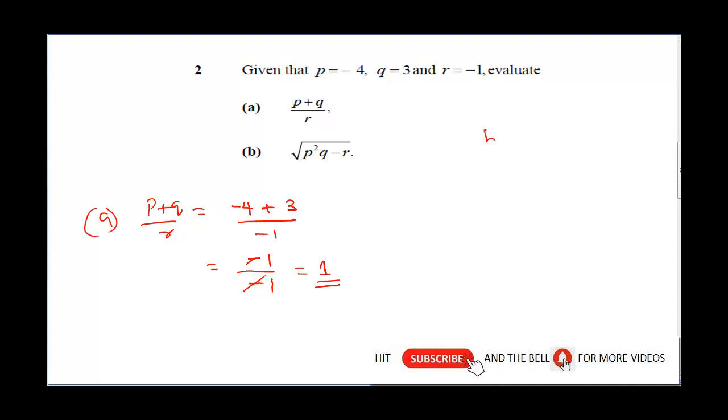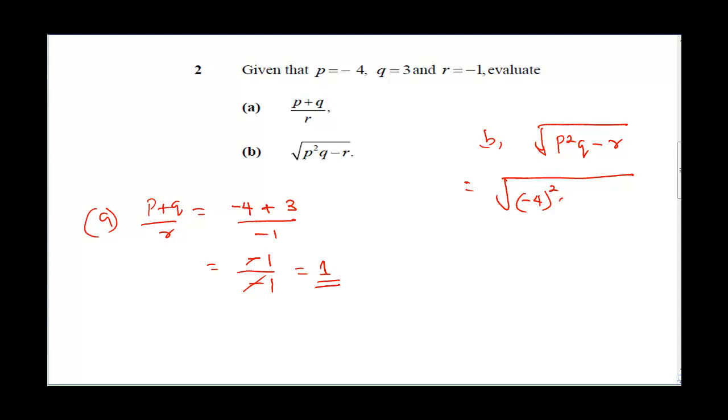Now b says evaluate the square root of p²q - r. This is going to give us the square root of (-4)² multiplied by 3, then you have minus r, which is -1. This gives us the square root of 16 times 3, which is 48, minus (-1).